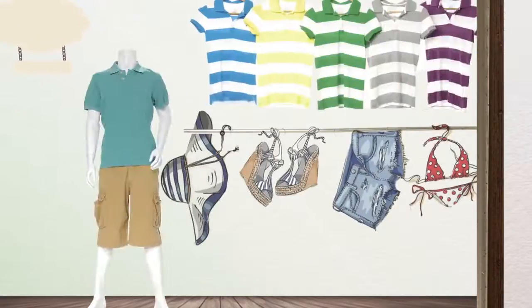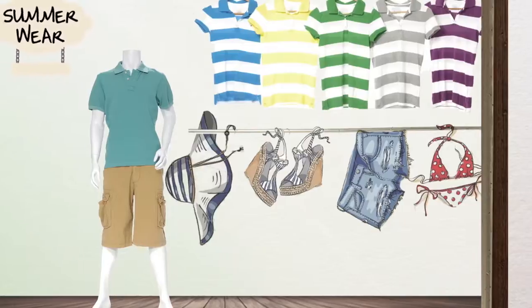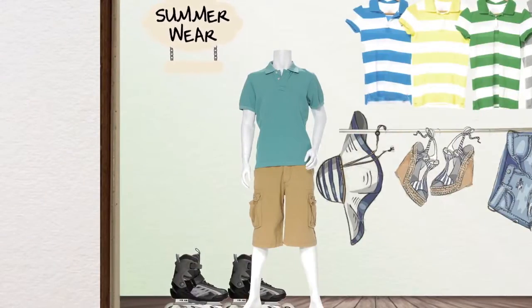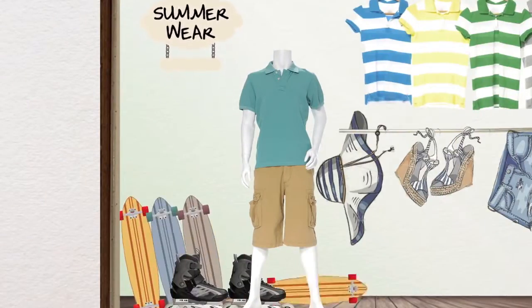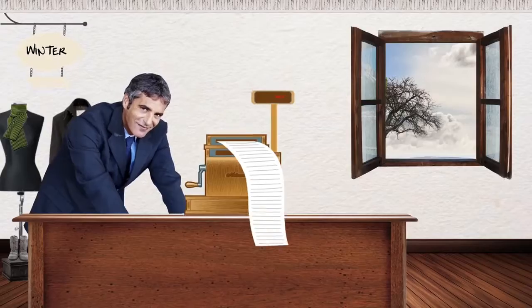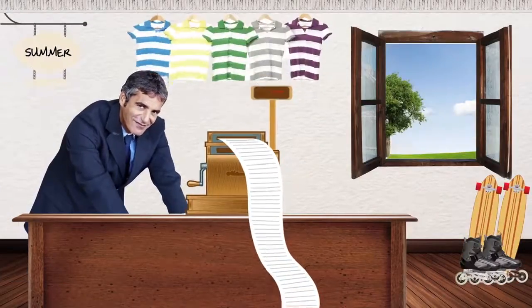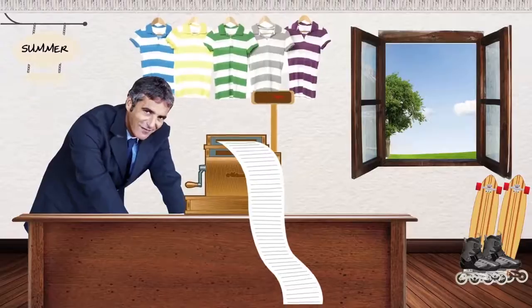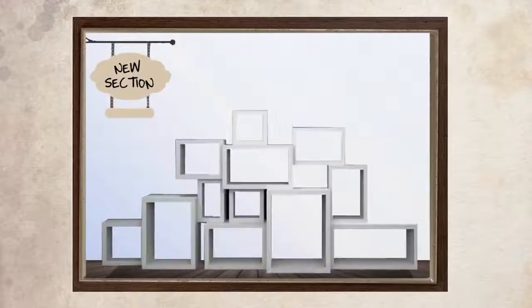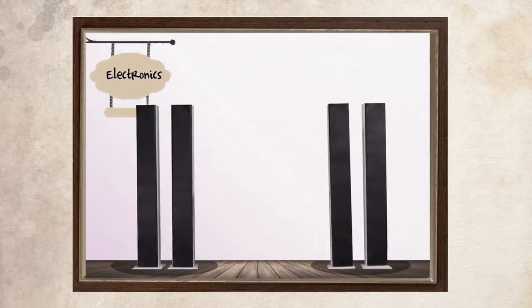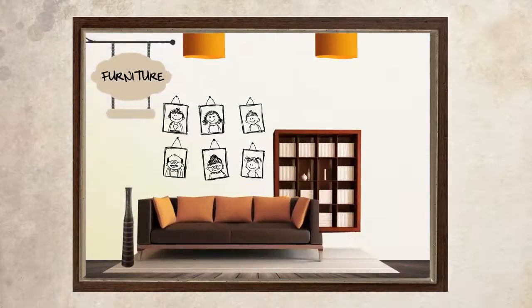Now imagine the store decides to expand its range of products. They open a section that sells all kinds of clothes and shoes that can be worn even in warmer weather. They even begin to sell regular roller skates, skateboards, and other accessories. Now the store starts doing well in both winter and summer.